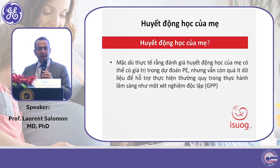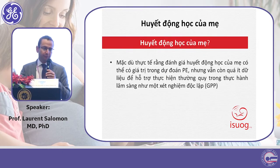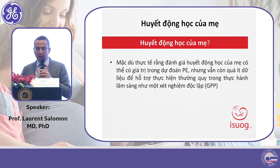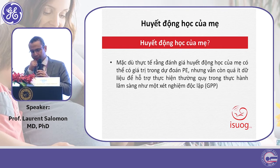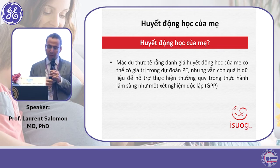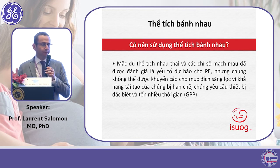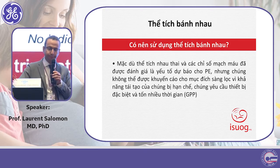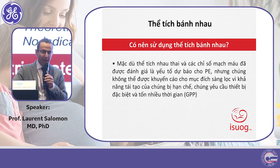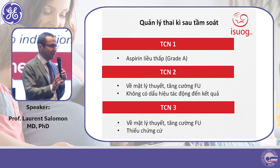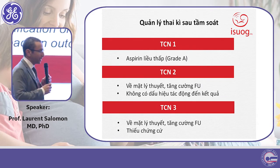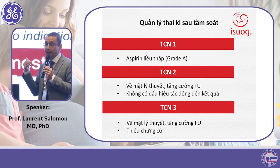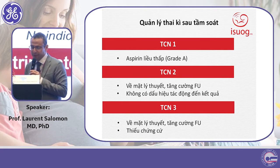Maternal hemodynamics — no value for the moment. Placental volume — no value for the moment. So really it is mainly first trimester combined screening, and then you should try to prevent preeclampsia.